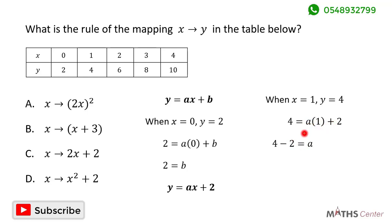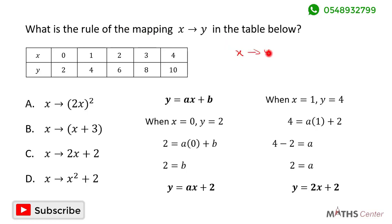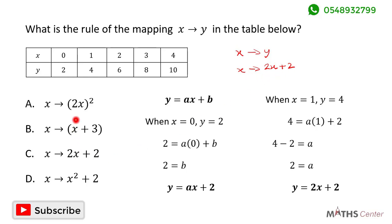Grouping like terms: 4 minus 2 is equal to a, so a is equal to 2. We have found a is 2 and b is 2, so our rule is y is equal to 2x plus 2. From the question, x maps to y, and y is 2x plus 2, so x maps to 2x plus 2. This is the rule of the mapping. Looking through the options, the correct option is C: x maps to 2x plus 2.